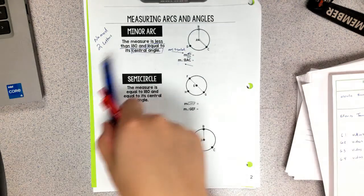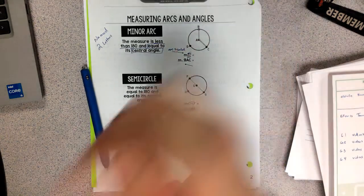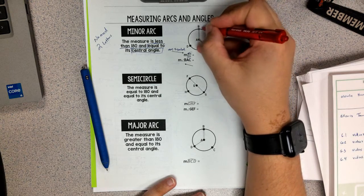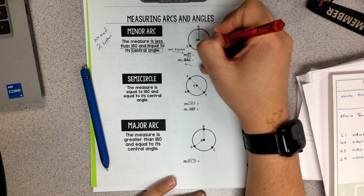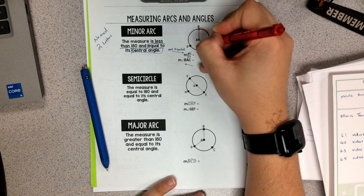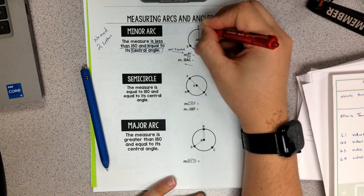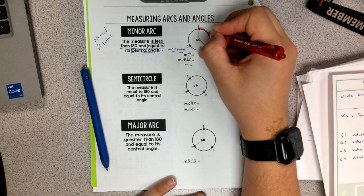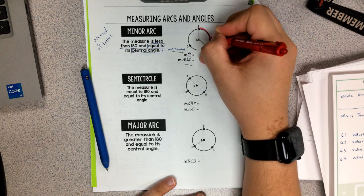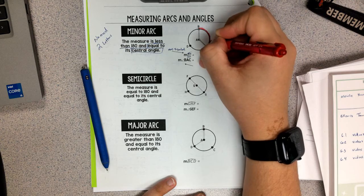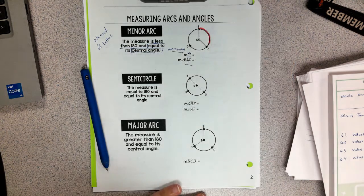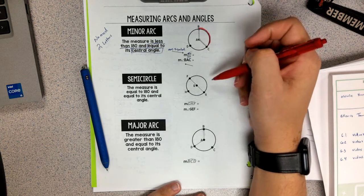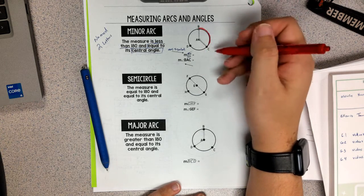So if we were to highlight that, because you're going to need some highlighters in order to really have success with this unit, we would highlight from B to C. But we don't go inside the circle because it's a curve, so we stay on the curve. We want to make sure that we are on that curve. And by staying on that curve, we can see that BC is less than 180. So this is my minor arc.